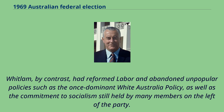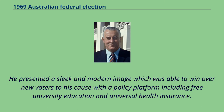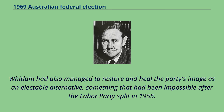Whitlam, by contrast, had reformed Labour and abandoned unpopular policies such as the once-dominant White Australia policy, as well as the commitment to socialism still held by many members on the left of the party. He presented a sleek and modern image, winning over new voters with a policy platform including free university education and universal health insurance. Whitlam had also managed to restore and heal the party's image as an electable alternative, something that had been impossible after the Labour Party split in 1955.